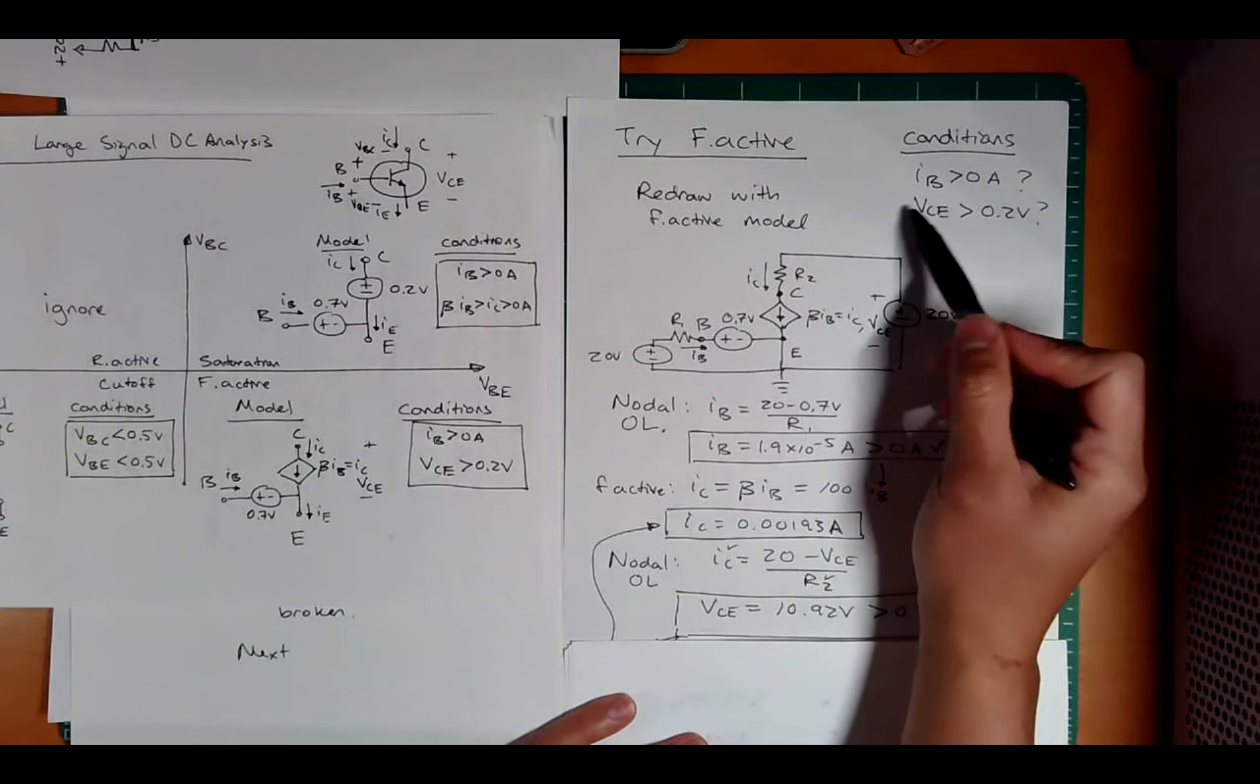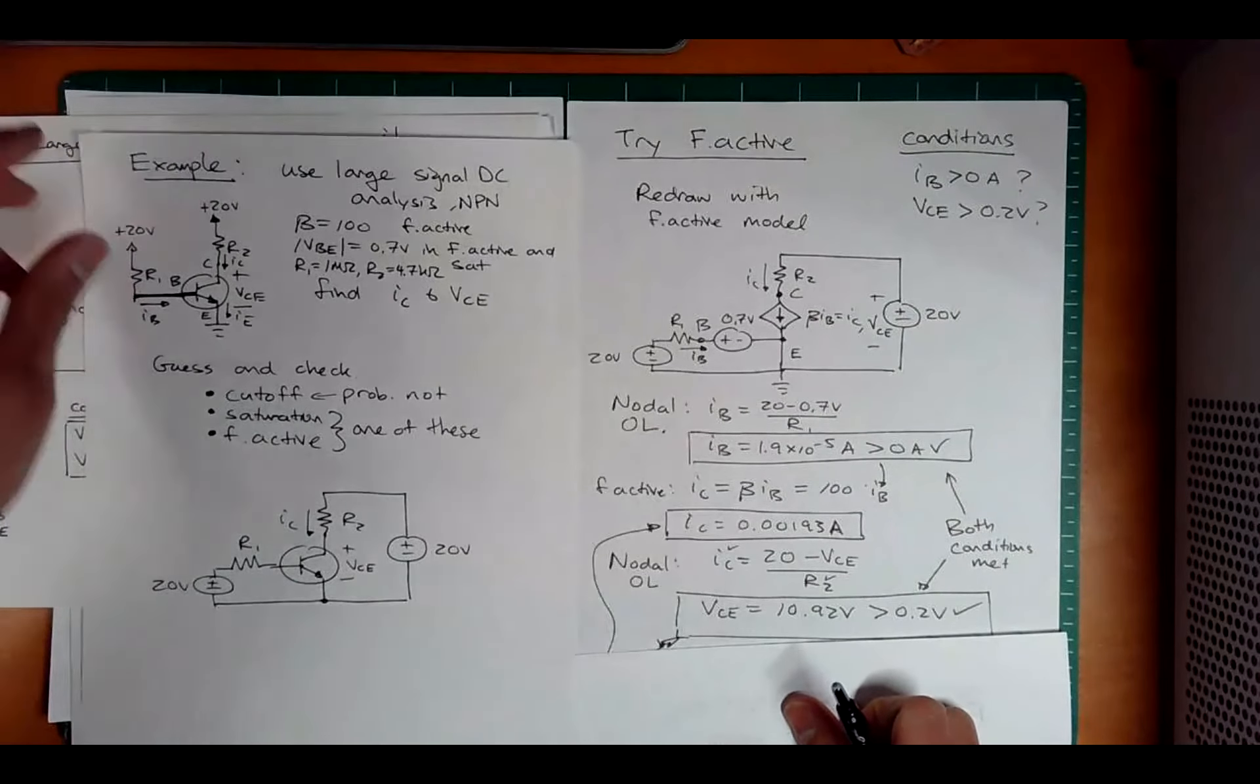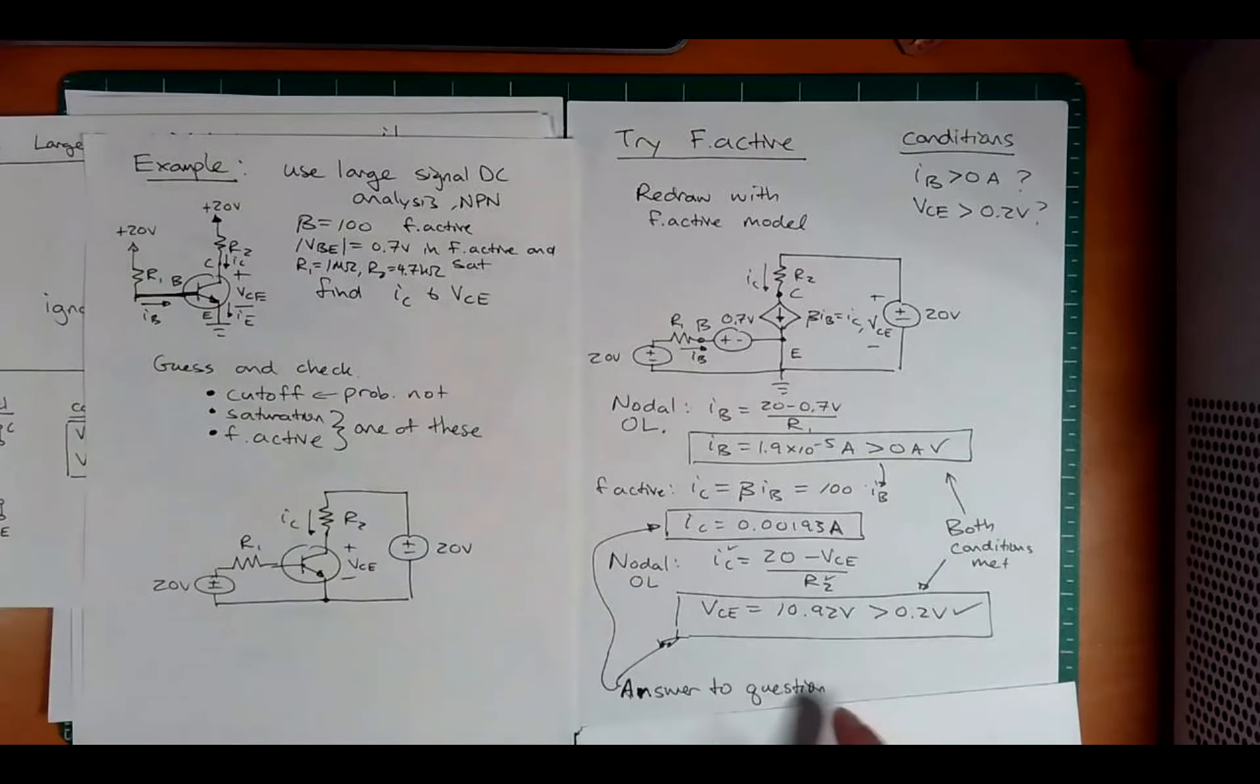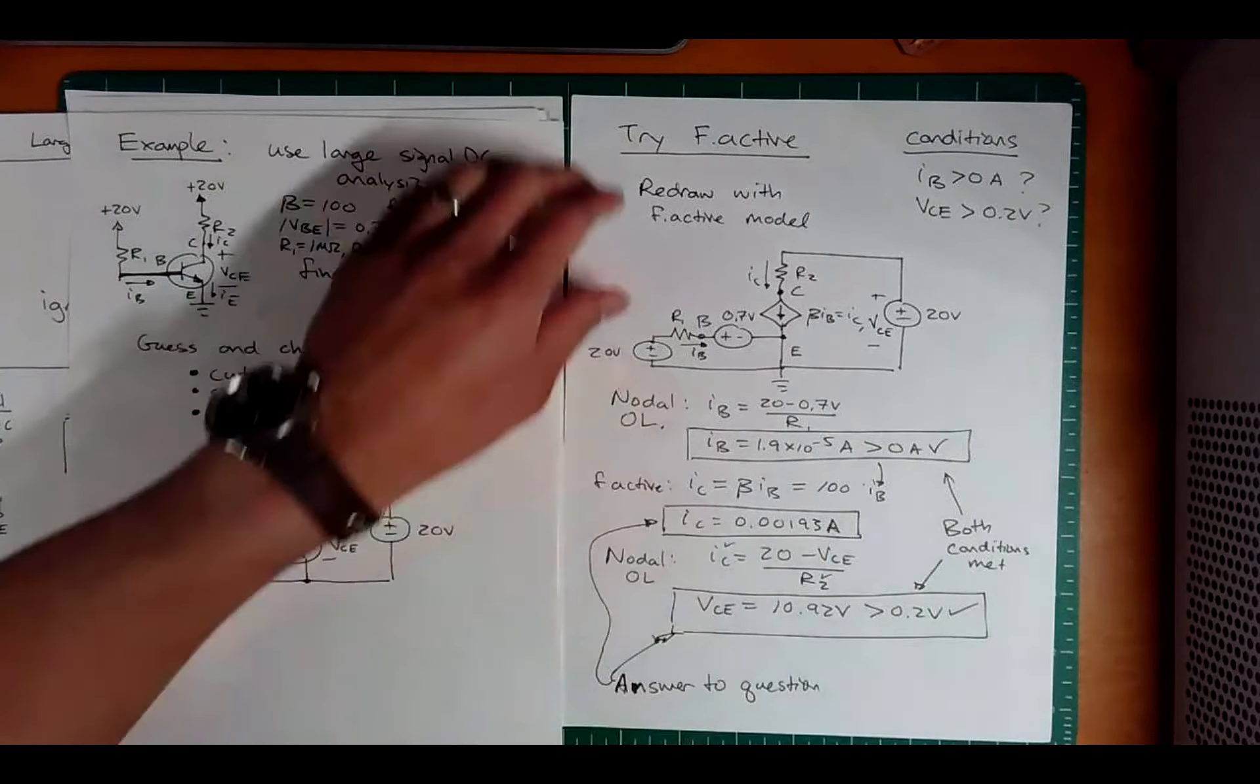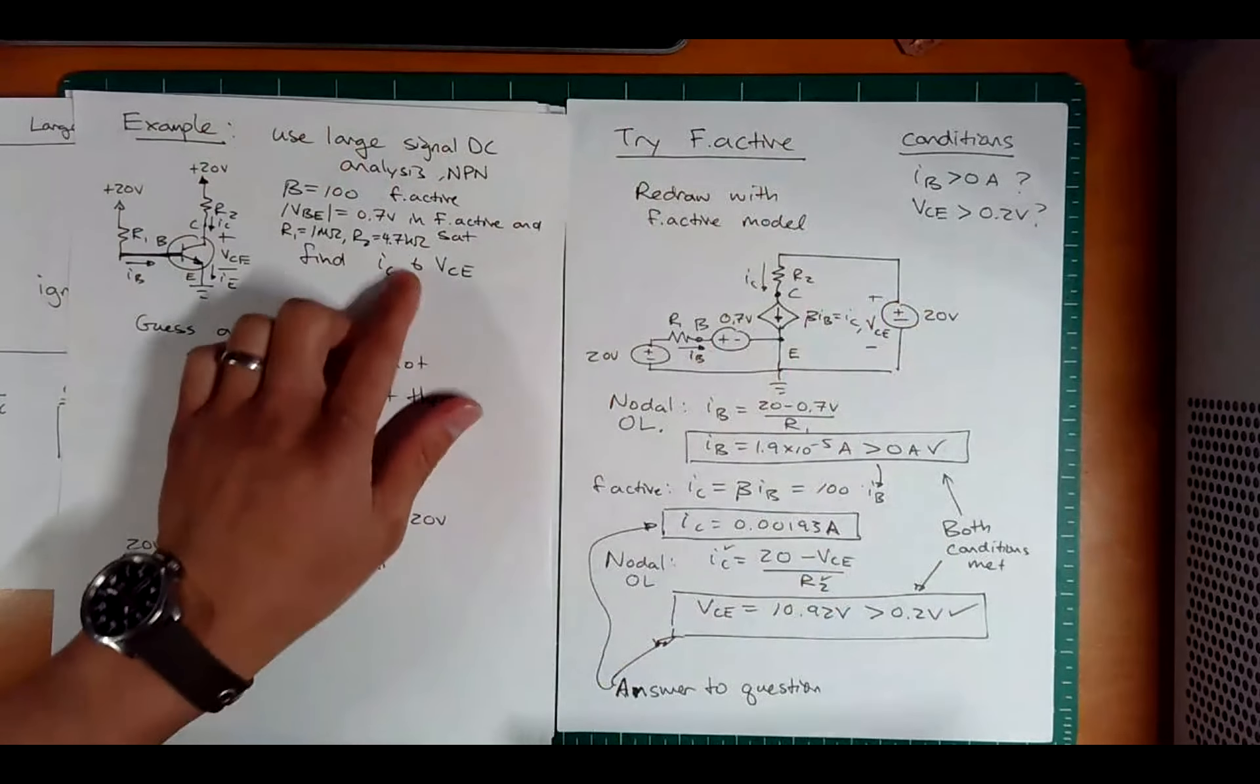And so this is definitely greater than 0.2 check. So we are satisfied that this is in forward active. Now we have to go back to the original question and go, what were we even looking for at the beginning? We're being asked for VCE. Fantastic. It's actually 10.92. And we're asked for IC, which is 0.00193 amps. So this is actually good. We're checking that this is in the right state and we're answering the question.